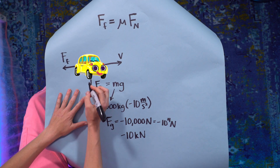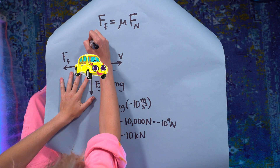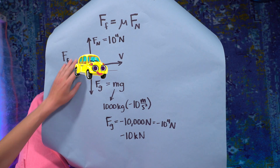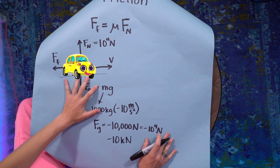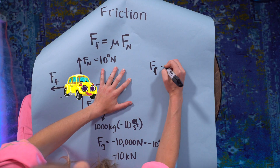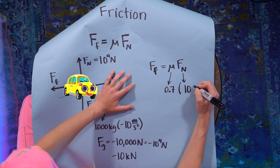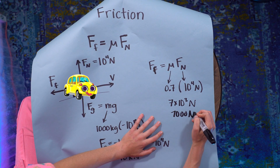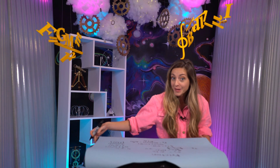The car is sitting on a road, so Newton's third law tells us there's a normal force pointing upward that's exactly opposite the gravitational force — also 10 kilonewtons. So we've found the normal force. Now we find mu by looking up the coefficient of friction for rubber on concrete, which is about 0.7. So the friction force as our car skids to a stop: F_friction = mu × F_N = 0.7 × 10⁴ N = 7 × 10³ newtons, or 7 kilonewtons. That's a big force, but cars are pretty massive, so it takes a lot of force to stop them.